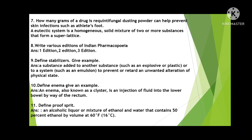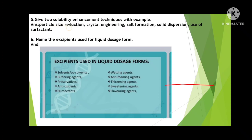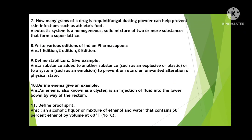What is a eutectic mixture? A eutectic system is a homogeneous solid mixture of two or more substances that form a super lattice. When two or more substances combine together they form a super lattice. For example, take camphor — it is a solid. When camphor is mixed with another solid powder, after some duration the camphor reacts with those powders and forms a eutectic mixture.